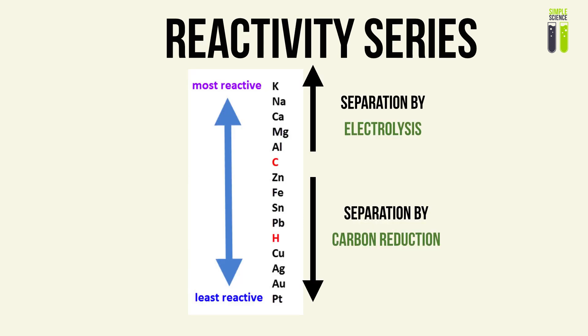Why do we have to use electrolysis to extract aluminium? A very important concept you should know is the reactivity series, where the position of carbon determines whether you separate with electrolysis or via carbon reduction for simplicity and cost efficiency. Aluminium is more reactive than carbon, so therefore it must be separated by electrolysis.